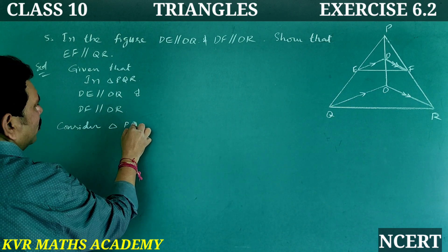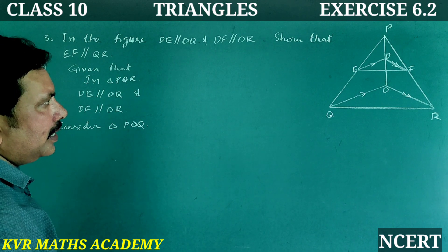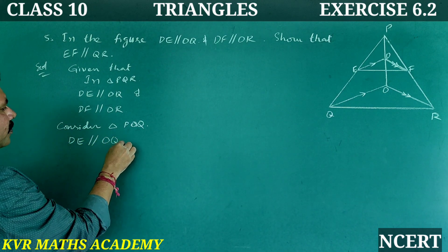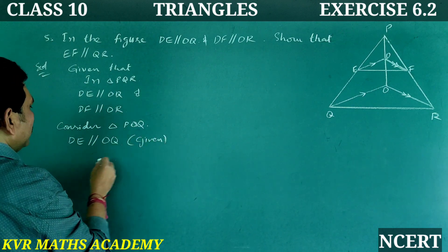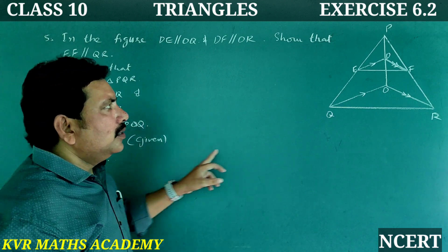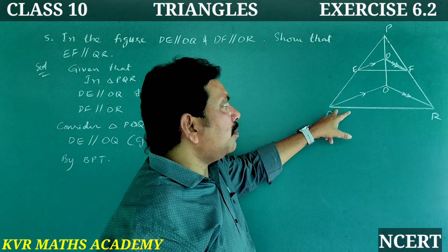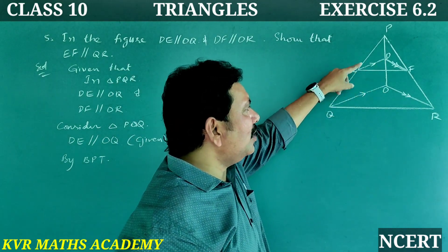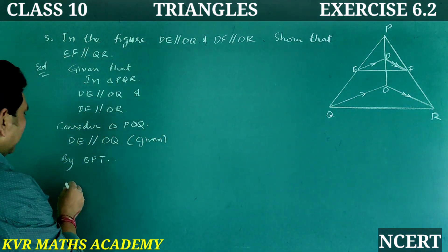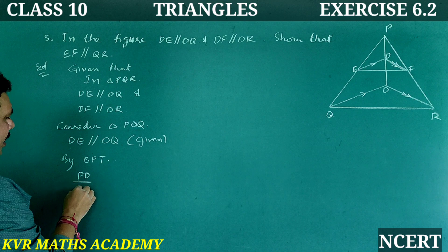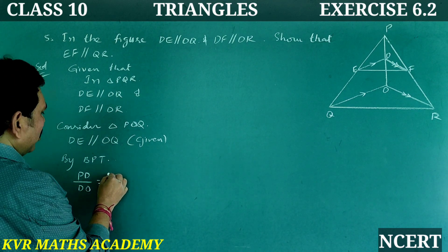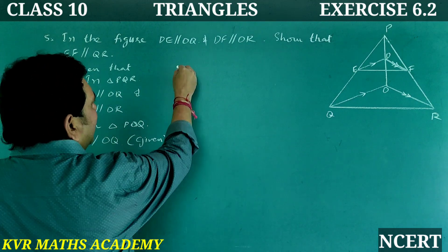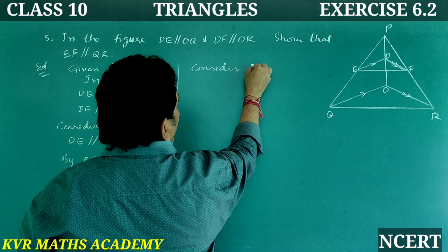Solution: In triangle PQR, DE is parallel to OQ and DF is parallel to OR. Consider triangle POQ. In triangle POQ, DE is parallel to OQ as given. So by the Basic Proportionality Theorem (BPT), PD by DO is equal to PE by EQ. This is equation one.